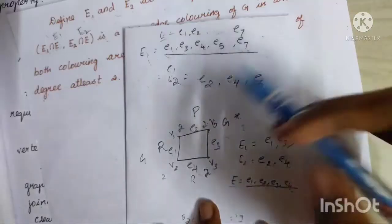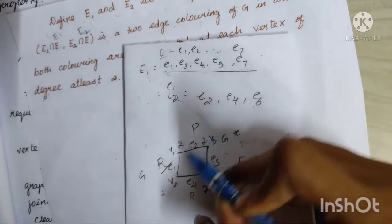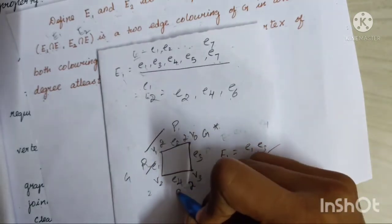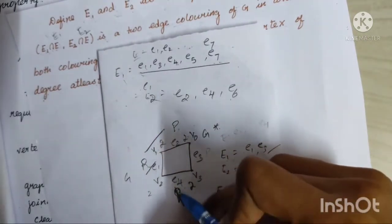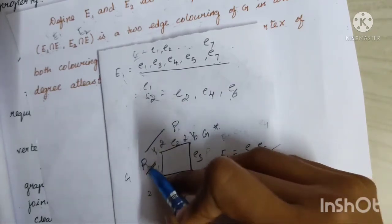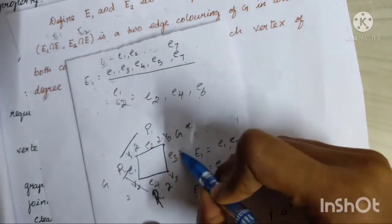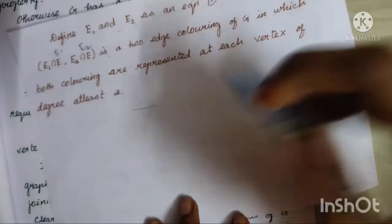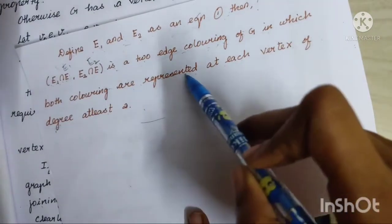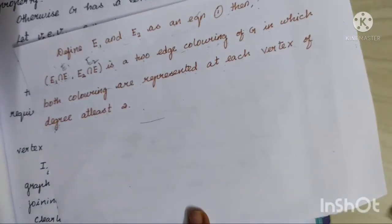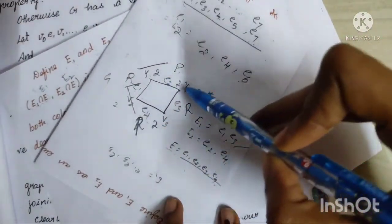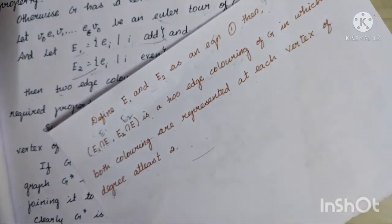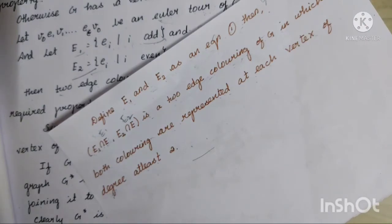What does this 2-edge coloring mean? If you look at this, we have red and pink edges. The adjacent edges are the same color. This is pink and red — the adjacent edges are the same color. The two colors are red and pink. Both colors are represented at each vertex of degree at least 2. I hope you can understand this lemma. Thanks for watching. Keep supporting our channel Math Mentor Tamil — if you have not subscribed, please do subscribe.